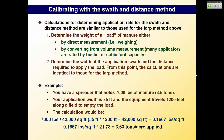For the swath and distance method: determine the weight of a load of manure in the spreader, figure out the application width, and how far they drove to empty it. For example: a manure spreader holds 7,000 pounds (3.5 tons), application width is 35 feet, and equipment travel distance is 1,200 feet. That gives 42,000 square feet — 35 times 1,200. Dividing 7,000 pounds by that area and applying the conversion factor gives 3.63 tons per acre.